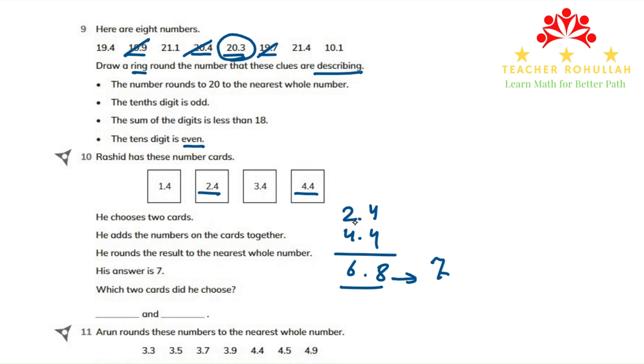So the two numbers which are added and rounded to 7 are 2.4 and 4.4. We added them together and then we rounded them up. The number we got is 7.